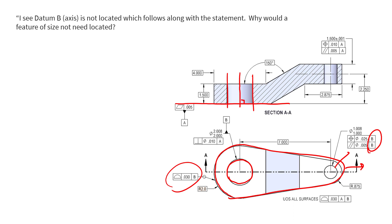By not locating datum B — and you would never be able to locate a primary, secondary, or tertiary datum feature — everything else is located with respect to them. So if they drift in location, everything else drifts in location with them. This gets a little tricky to understand when it's a feature on the inside of a part.